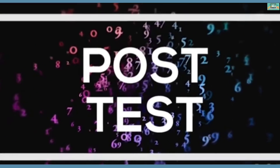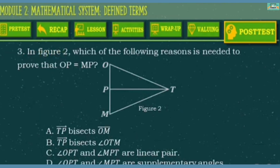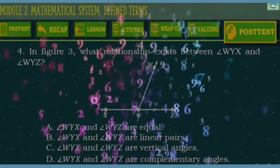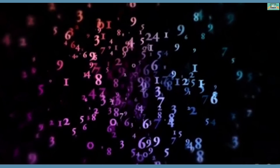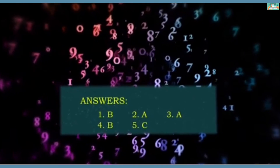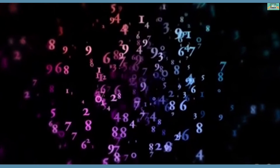For our post-test, you're going to identify what is being asked in each question. Write the letter of the correct answer. You may pause the video and play it once you're done answering. Here are the answers: Number 1: B. Number 2: A. Number 3: A. Number 4: B. Number 5: C.